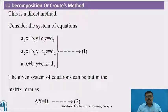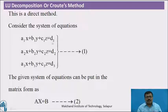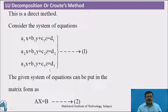LU decomposition, also called Crout's method, is a direct method. Consider the system of equations: A1x + B1y + C1z = D1, A2x + B2y + C2z = D2, A3x + B3y + C3z = D3.